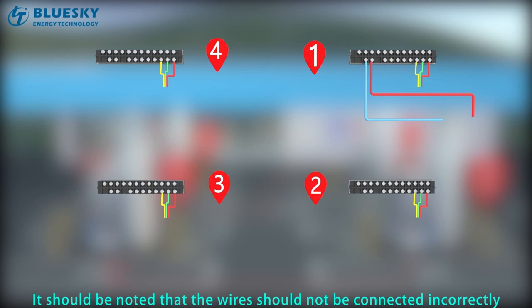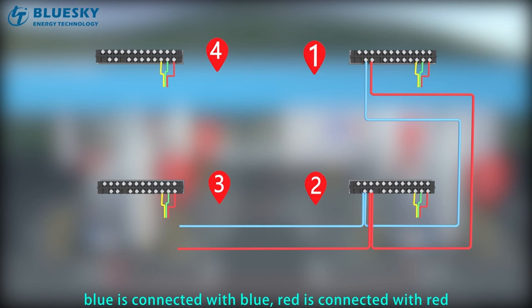The wiring in the junction box is as follows. It should be noted that the wiring should not be connected incorrectly: blue is connected with blue, red is connected with red.